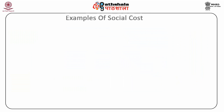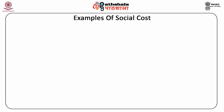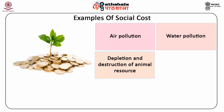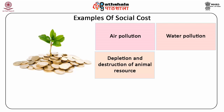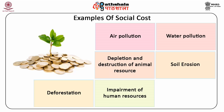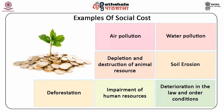The following are some examples of social cost for which a business firm is responsible: air pollution, water pollution, depletion and destruction of animal resources, soil erosion, deforestation, impairment of human resources, and deterioration in law and order conditions.